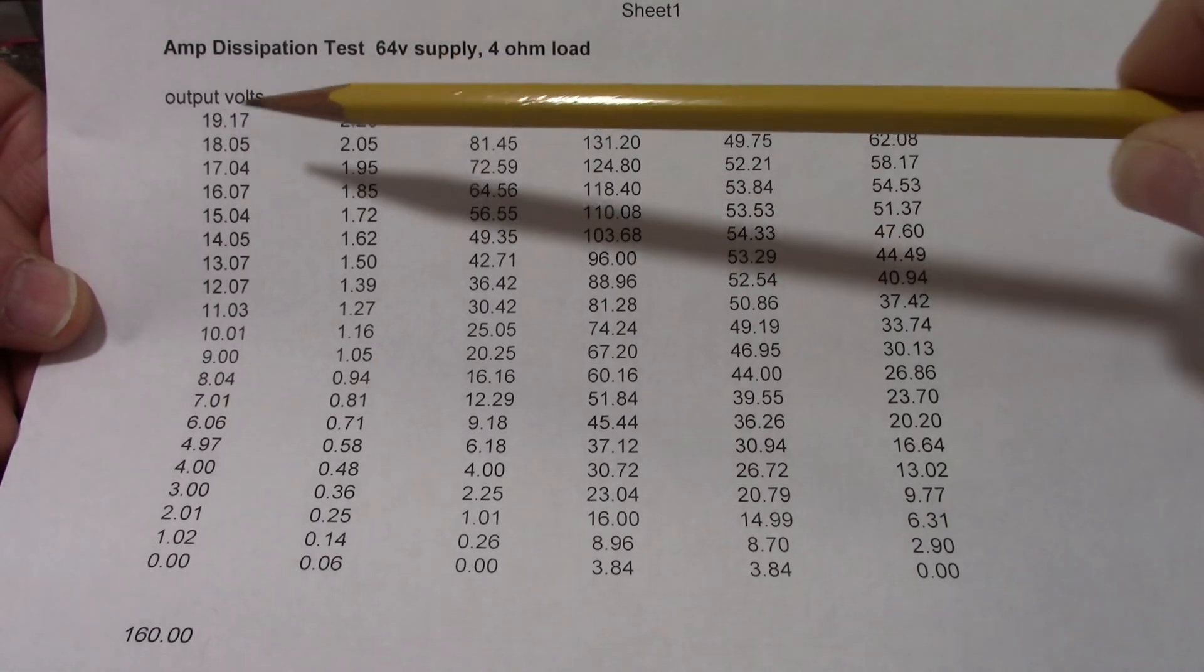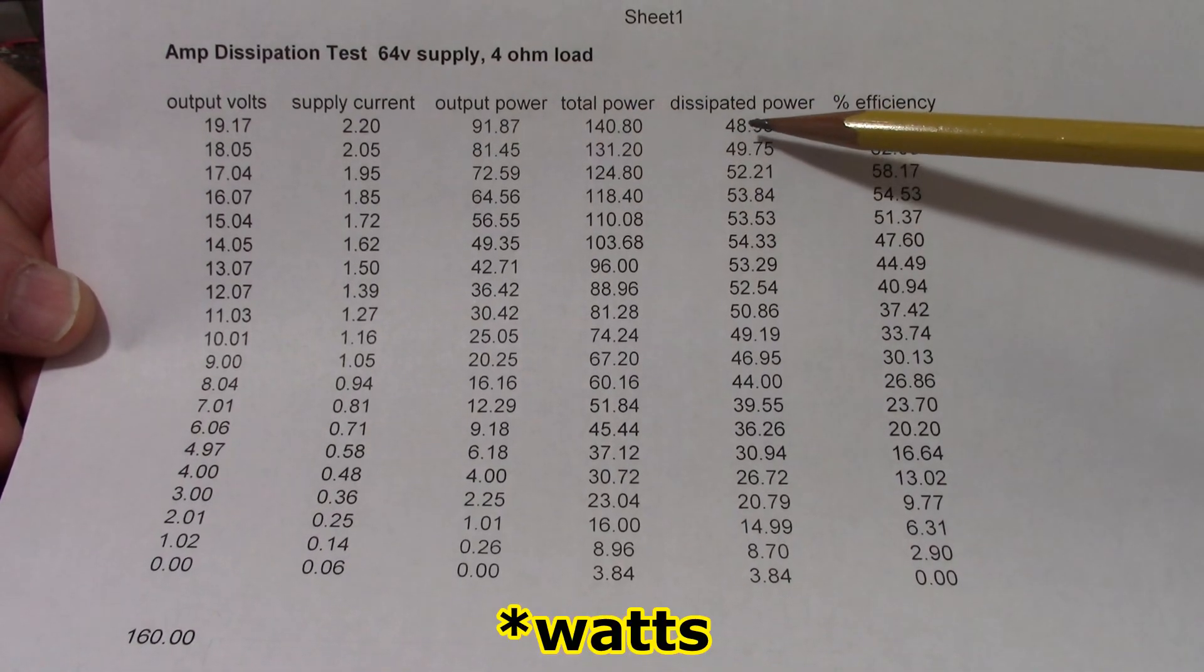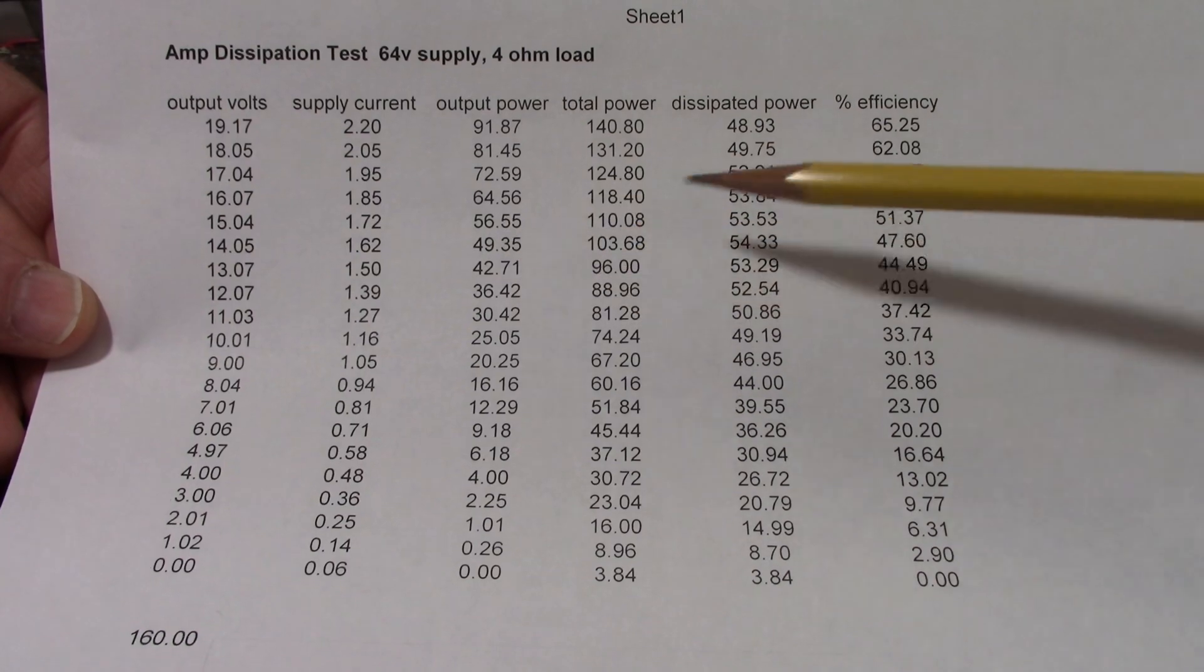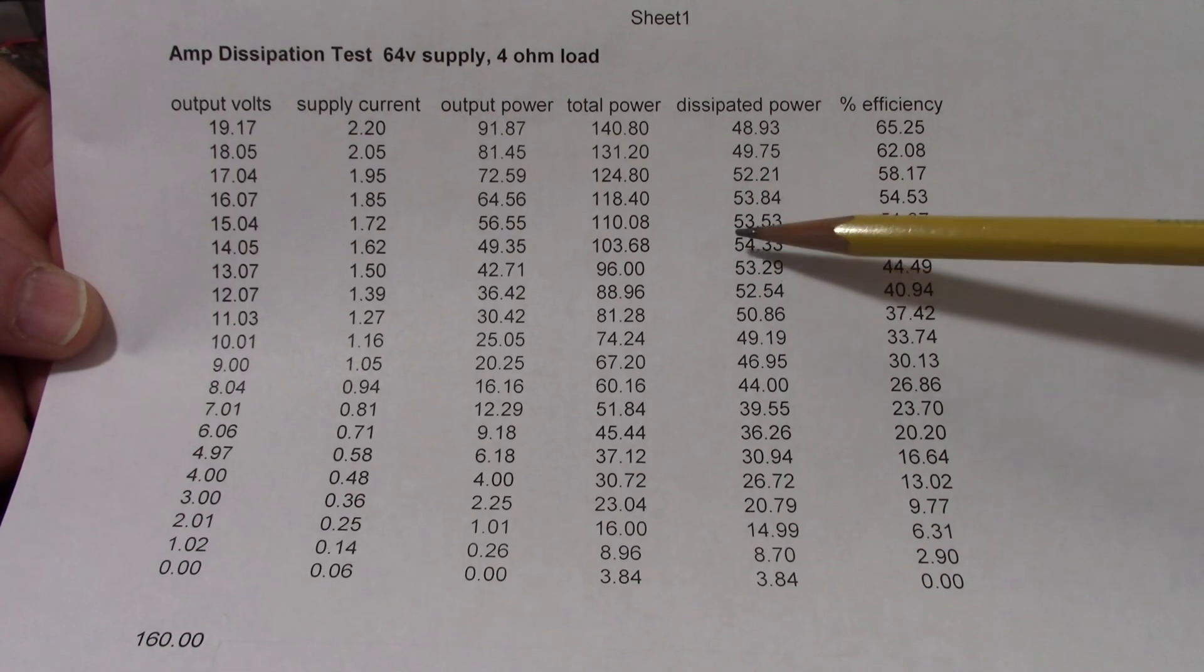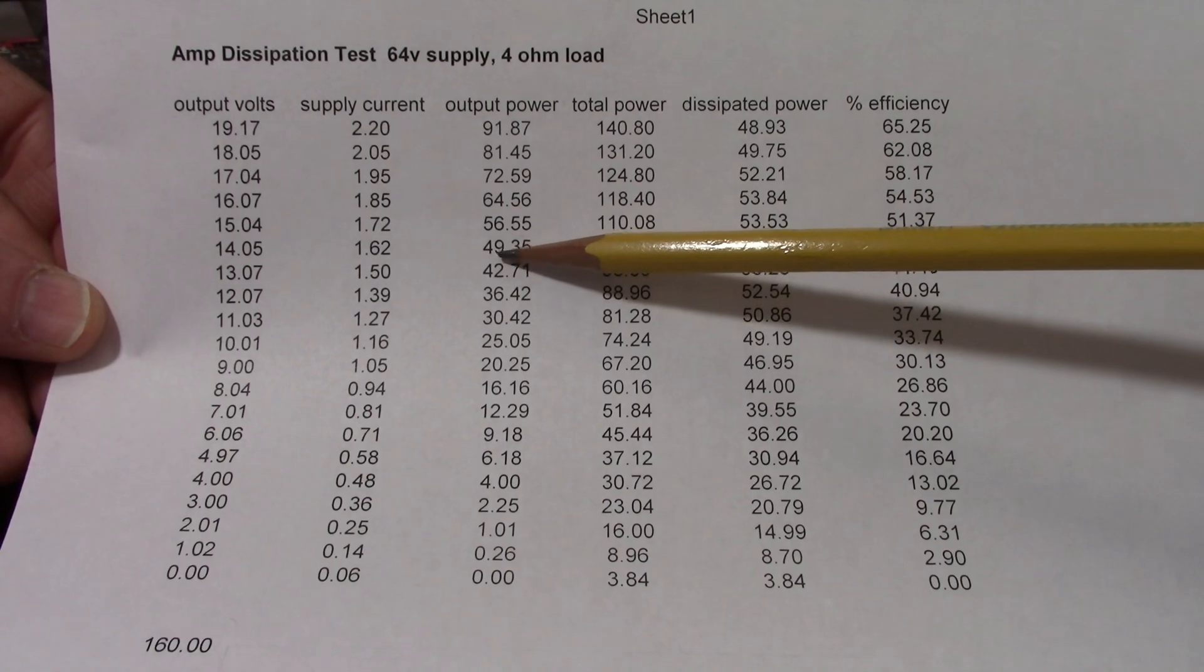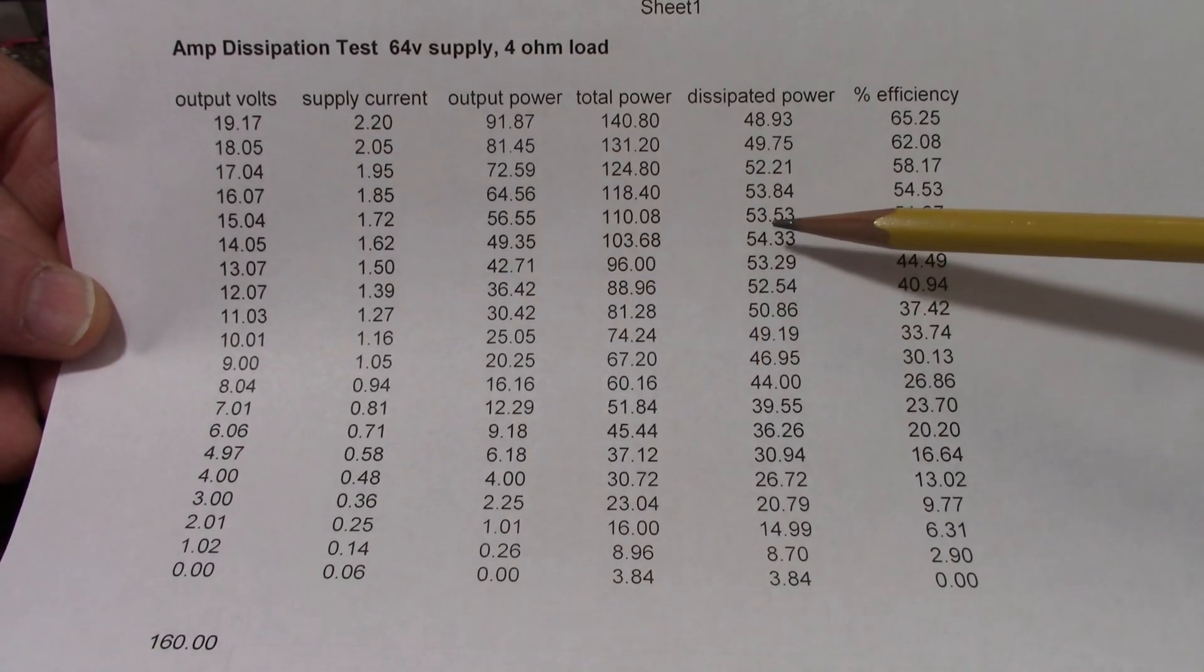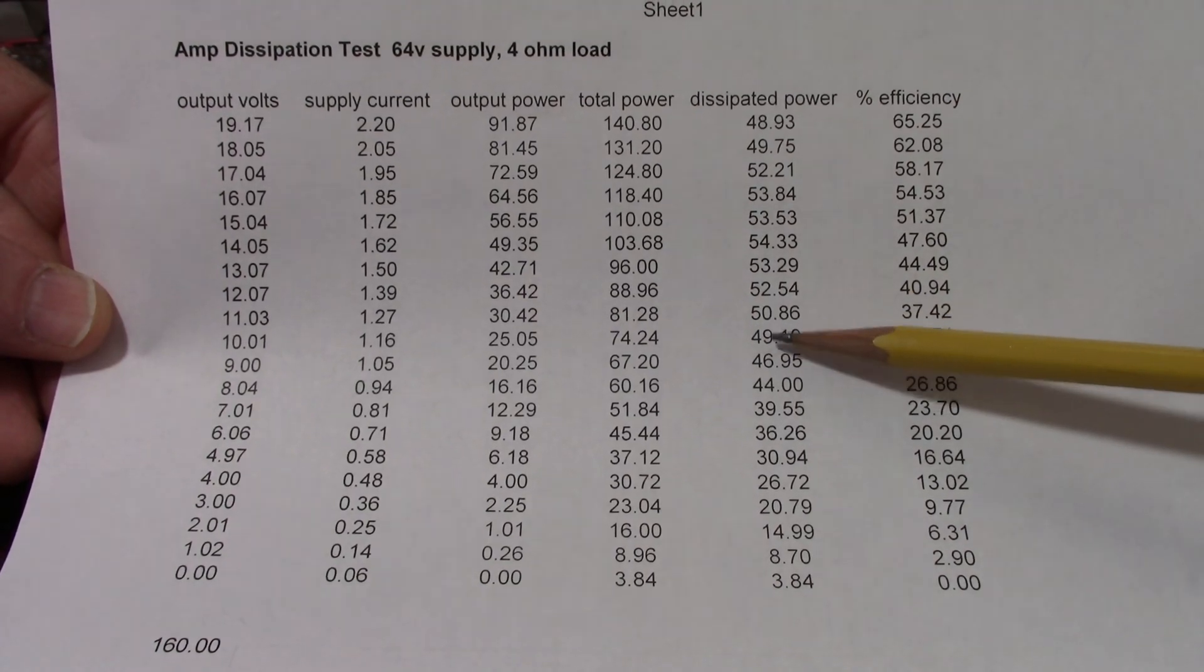See we start at our maximum output power around 92 watts again, it's around 49. But as I lower the signal, see the output power is dropping but the dissipated power increases and it peaks at 54.33 at around 49 watts. And as I keep lowering the power eventually it starts dropping again to 49 watts.